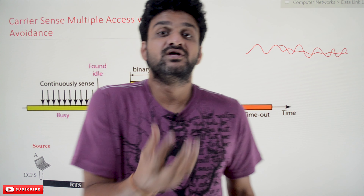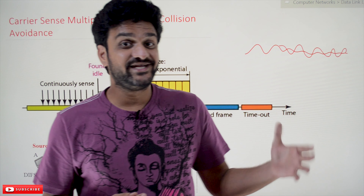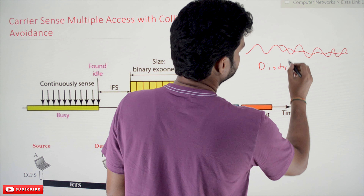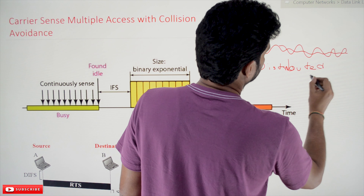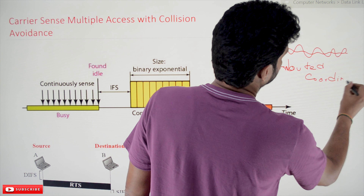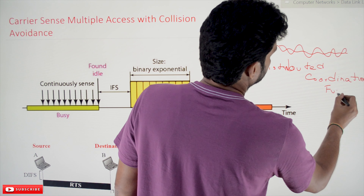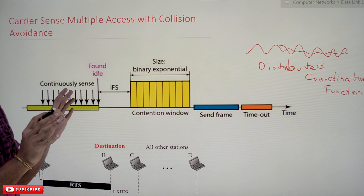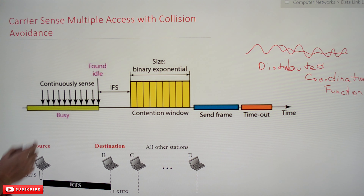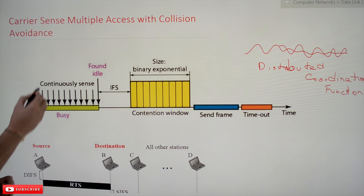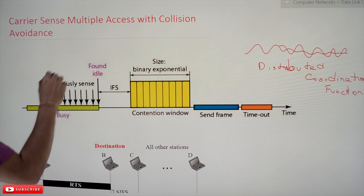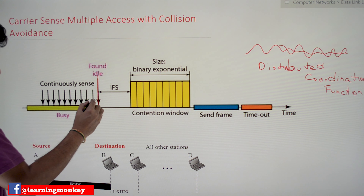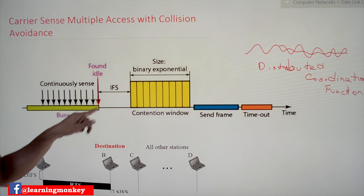In wireless networks, collision is avoided based upon the concept called Distributed Coordination Function, or DCF. We will try to understand how this collision avoidance works using a diagram. Whenever a station wants to transmit data, it will continuously sense the medium. When it identifies that the medium is idle, it will wait for IFS time.